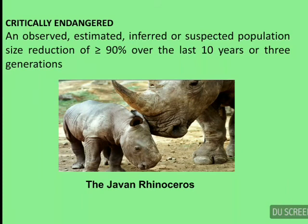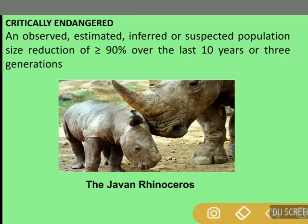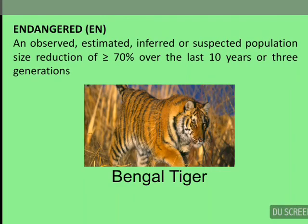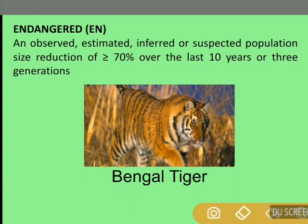Next we have Critically Endangered. An observed, estimated, inferred, or suspected population size reduction of either 90% or more than 90% over the last 10 years or 3 generations. An example here is the Bengal tiger.